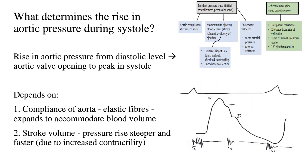As we've already seen in the last video, we know that an arterial pressure pulse wave consists of the percussion wave, the tidal wave, and the dicrotic wave. Today we'll be focusing on this particular incident pressure wave, or the initial systolic wave, called the percussion wave.